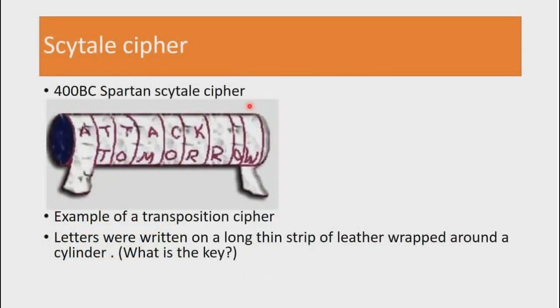Now the Scytale cipher is an encryption mechanism that was used as early as 400 BC, and this cipher is an example of a transposition cipher.